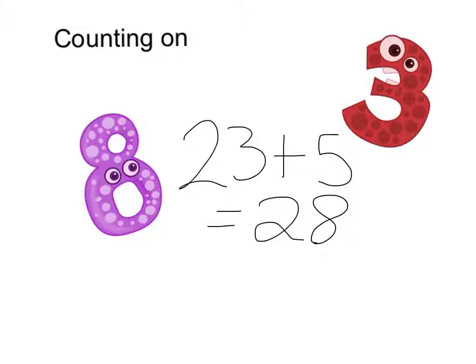Again, if I wanted to do 4 plus 63, I would put the 63 in my head because it's the biggest number and count on 4. So 63, 64, 65, 66, 67.